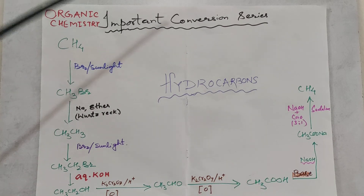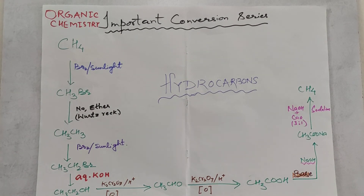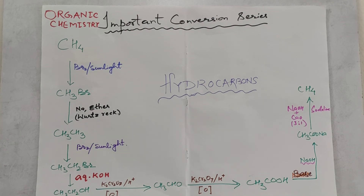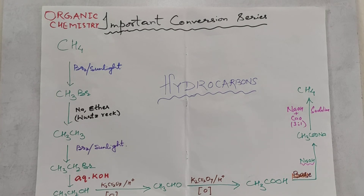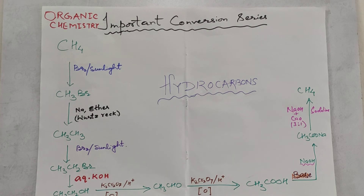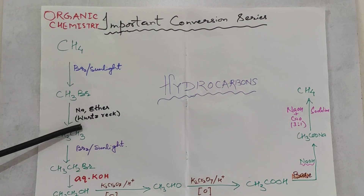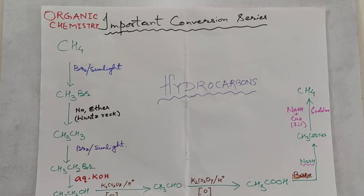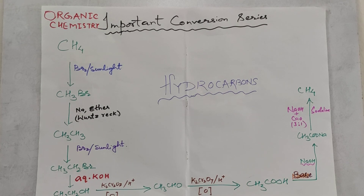This is an important conversion. If you remember these reactions, you will be able to solve a lot of important conversions. For hydrocarbons, you need to remember alkanes, alkenes, alkynes, and aromatic benzene through these conversions. We have seen about 8 reactions in this series. You can subscribe to my channel for further videos on conversions and other branches of chemistry. Thank you, students.